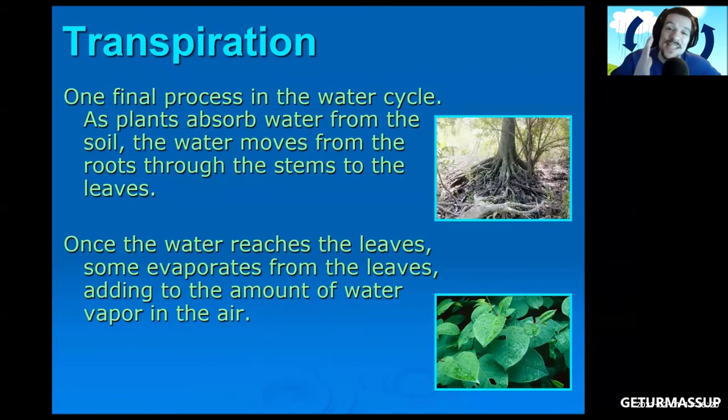The last thing I want to talk to you guys about is transpiration. And just like evaporation, transpiration is just where water is entering the atmosphere. The only difference is it's coming out of the leaves of plants. To add this to your notes: one final process in the water cycle - as plants absorb water from the soil, the water moves from the roots through the stems to the leaves. Once the water reaches the leaves, some evaporates from the leaves, adding to the amount of water vapor in the air.